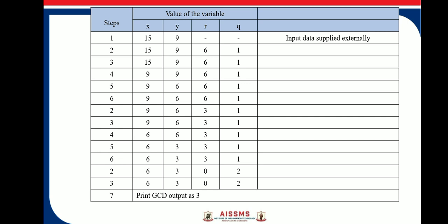And here, 6 is divided by 3. So answer is 0, remainder is 0 and quotient is 2. Now here, remainder is 0. So therefore, we will compare R with 0. If it is 0, then go to Step 7, which is occurred in Step 3 and here, it is observed that in Step 7, we will print content of Y, where Y is nothing but the 3 and here, the greatest common divisor of 15 and 9 is 3. So in this way, we can analyze the algorithm.